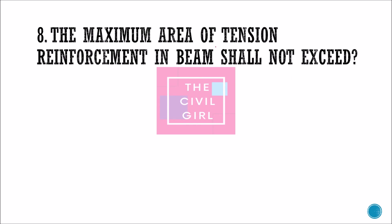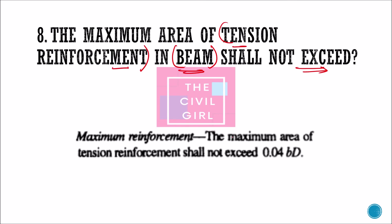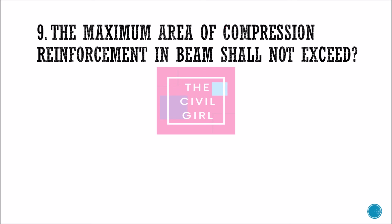The maximum area of tension reinforcement in a beam shall not exceed 0.04 bd, where d is the overall depth and b is the width of the section — this is the gross cross-sectional area. So the maximum area of tension reinforcement in a beam is 4% of the cross-sectional area.